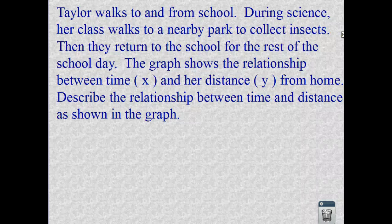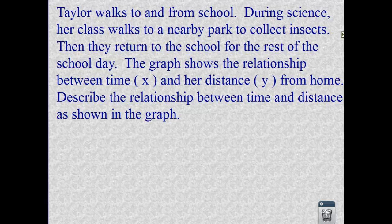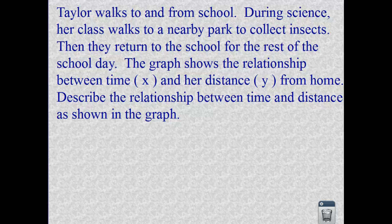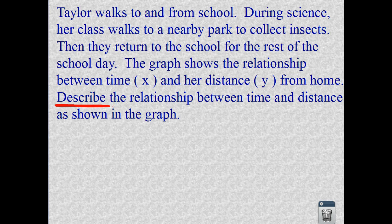Next example. It says, Taylor walks to and from school. During science, her class walks to a nearby park to collect insects. Then they return to the school for the rest of the school day. The graph shows the relationship between the time X and her distance Y from home. Describe the relationship between time and distance as shown in the graph. So I am going to give you the graph of the path that Taylor took on her walk to and from school and her little adventure out to the park when she was collecting insects. So I'm going to take you through this. And it says to use a description of what is happening. And I've actually already typed that out for you, and I'm going to walk you through each part of this.